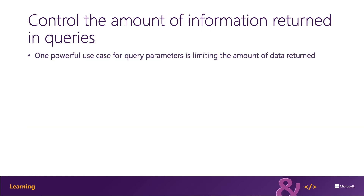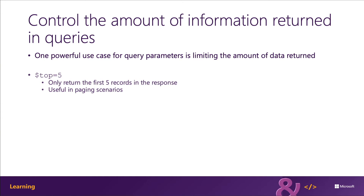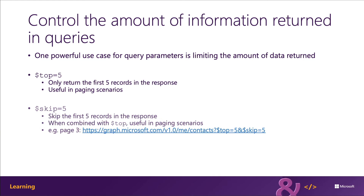One of the most powerful uses of query parameters is to control how much data is returned in the response to a request. The top parameter enables you to limit the response to only include a specific number of records. The skip query parameter enables you to skip the first number of results in the response. Some queries against Microsoft Graph can return multiple pages of data, either because of server-side paging or because of the use of a top query parameter to specifically limit the page size in a request.